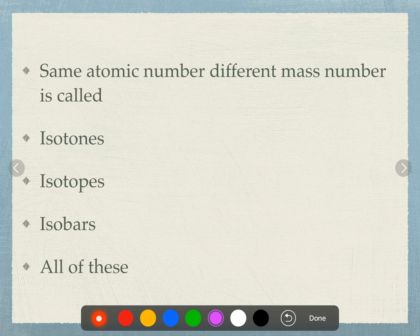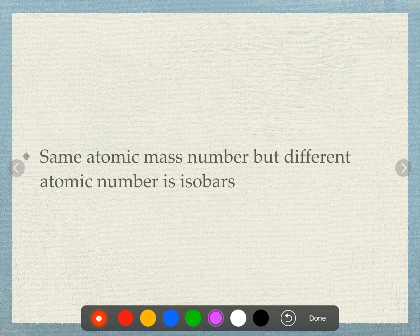Same atomic number but different mass number is called isotopes. Isotopes are the answer. Same atomic mass number but different atomic number is called isobars.